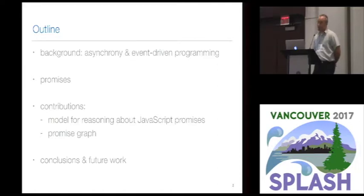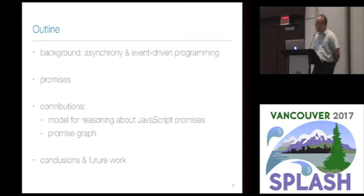Then I'll get to the contributions of our paper, which is going to be a formal model for reasoning about promises, and the promise graph — a data structure we introduced aimed at helping programmers find errors in promise-based JavaScript code. And then I'll conclude and give some directions for future work.